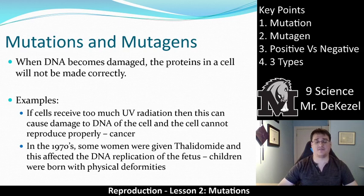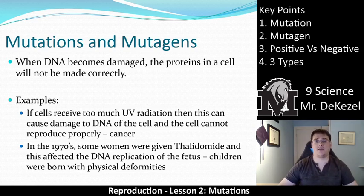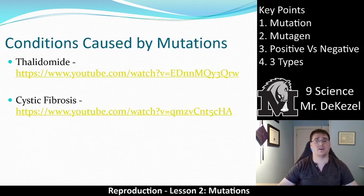Children were born with physical deformities — often with no hands, no legs, smaller limbs, or maybe only two fingers. There were lots of different complications. So when mutations occur is very important. This occurred in the fetus and caused deformities, whereas a mutation in your skin cells might not always cause cancer — it can be a big deal, but not as big a deal.